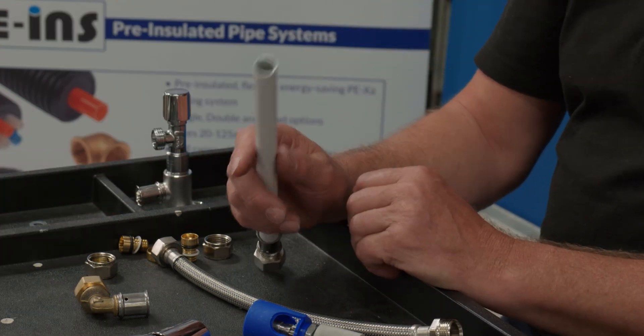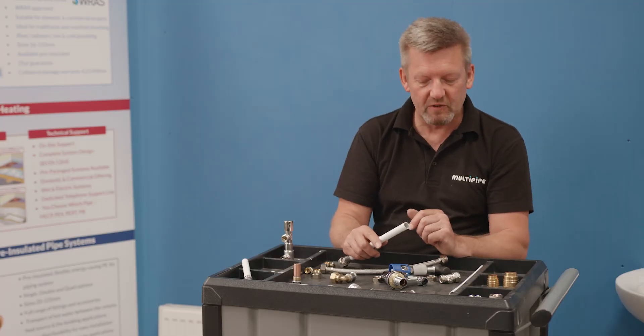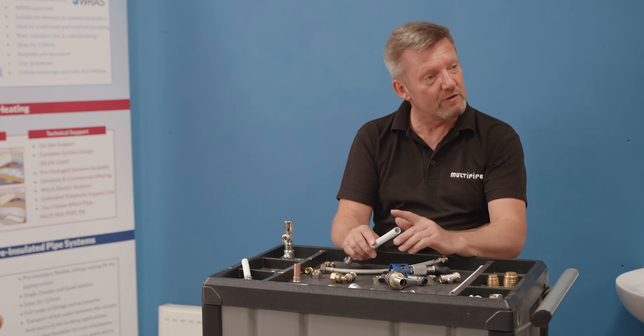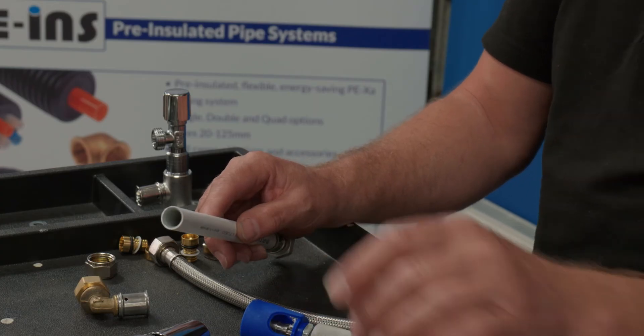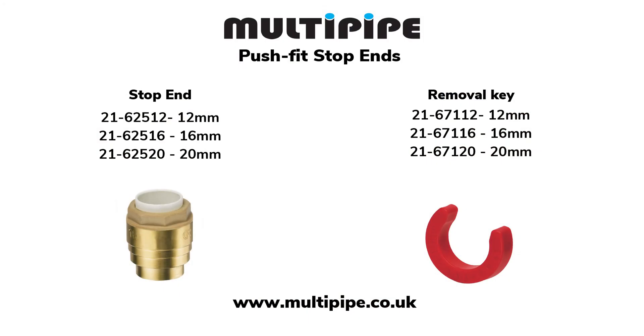And that about covers the range of fittings. One thing I'd just like to finish off with, especially for the plumbers out there that are using MLC for first fixing, don't forget the superb removable stop ends. Great for first fixing, cut your pipe fair and square, bevel the pipe, push the adapter onto the end there and that's great then for first fixing.